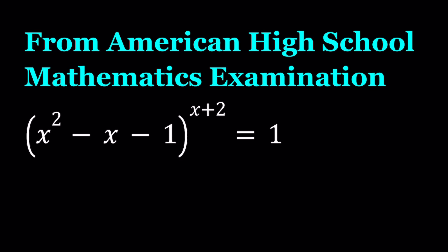So we have this equation, x squared minus x minus 1 to the power x plus 2 equals 1. This problem appeared in 1985. By the way, when we look at an equation like this, where we have variables on the left hand side, an exponential expression, and one on the right hand side, we have a special case or three cases.